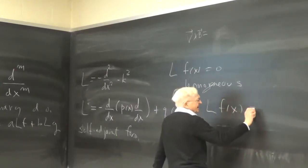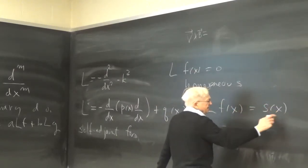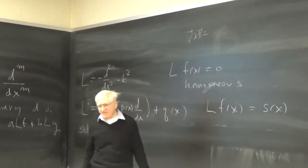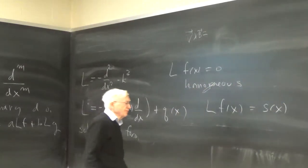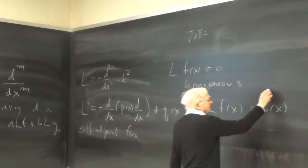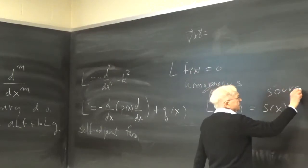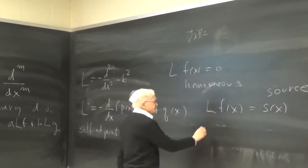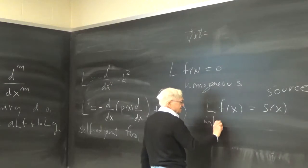If on the other hand you have an equation of the form L·f(x) equals s(x), where s doesn't have anything to do with f — s is a source term — then this is said to be inhomogeneous.